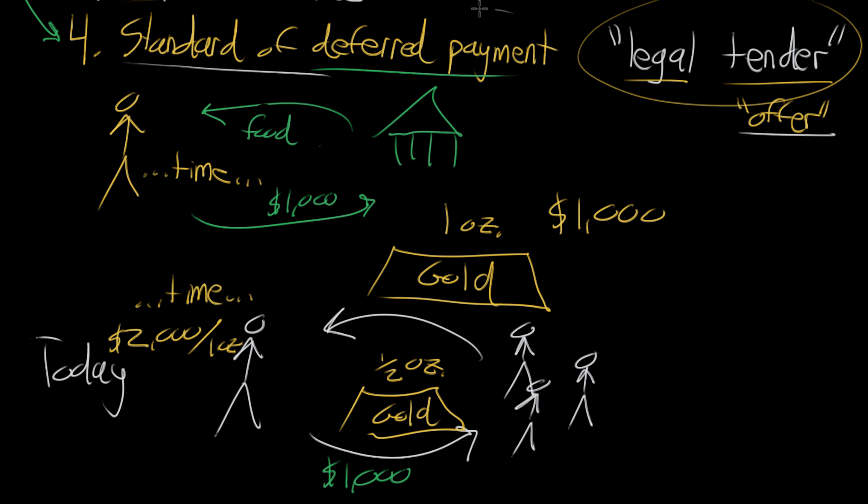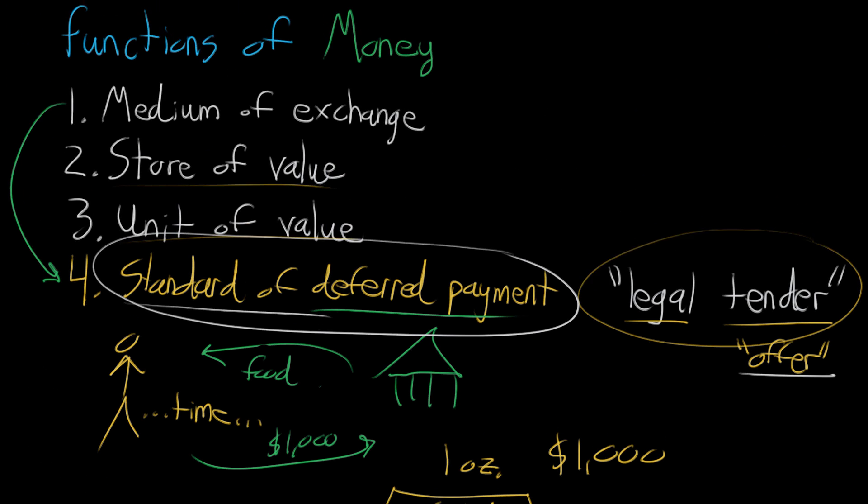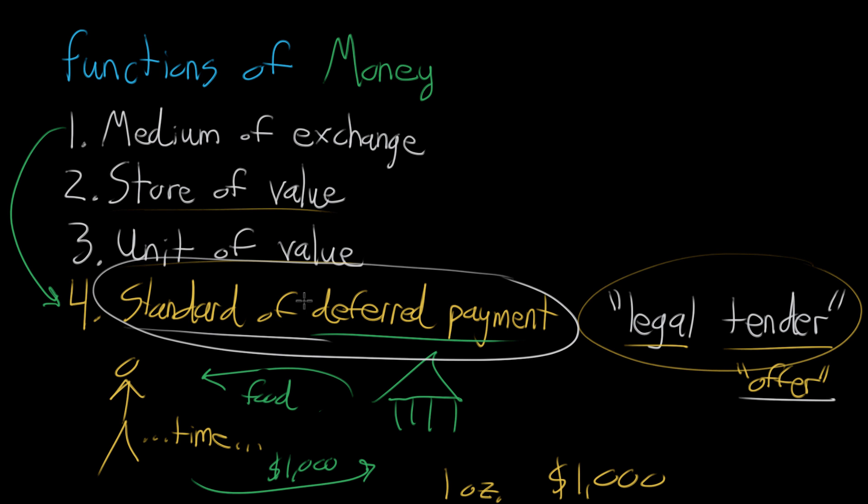So the whole point here is that the standard of deferred payment actually has some legal clout to it. So what you could argue separates it from the other functions of money is this fact that the currency in most modern economies is actually tied up with the legal system of the associated country. So with that, I will see you next video.